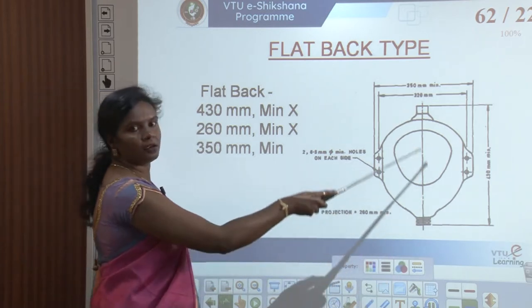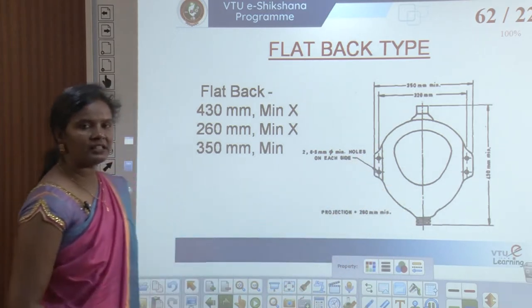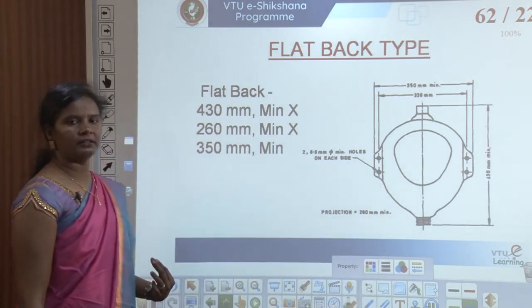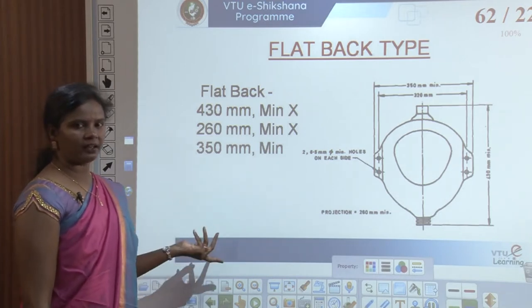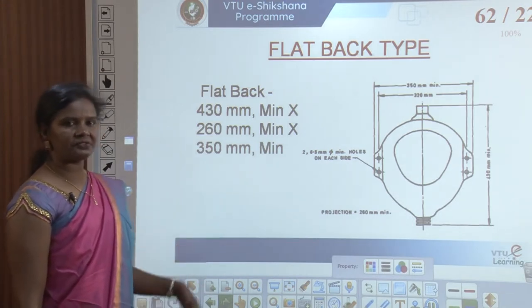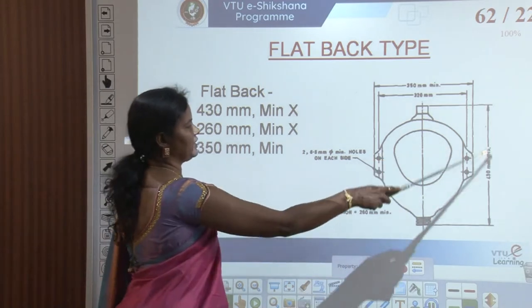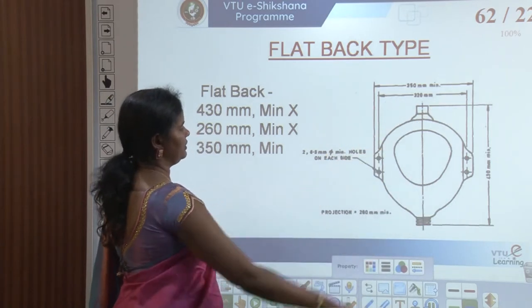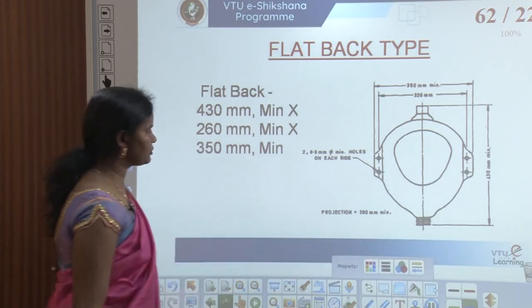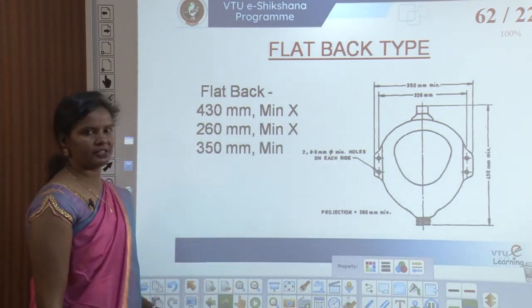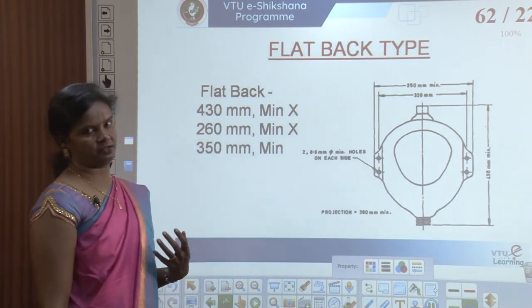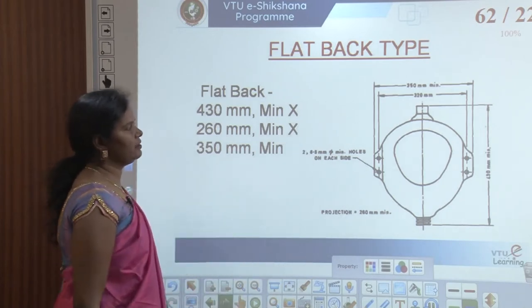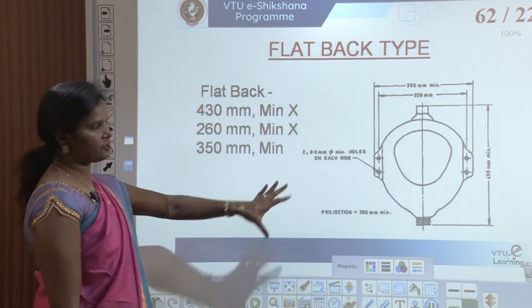You can see this is the bowl type. Flushing happens at the bottom. In the bowl type, the flat back has a flat back. The size of this is 430 mm depth and 350 mm, and the smaller size could be 260 mm minimum. The hole size is less than 500 mm. This is fixed onto the wall.